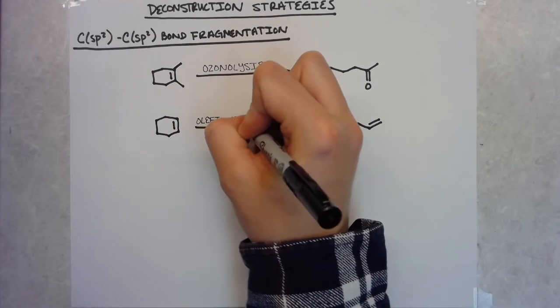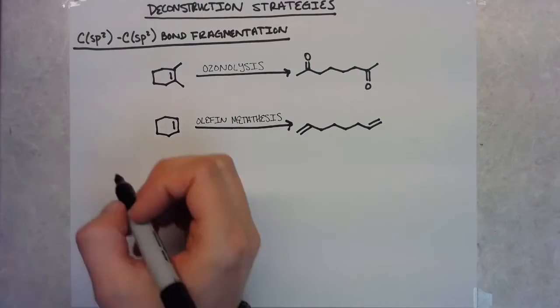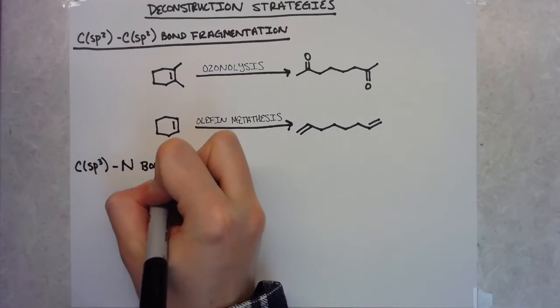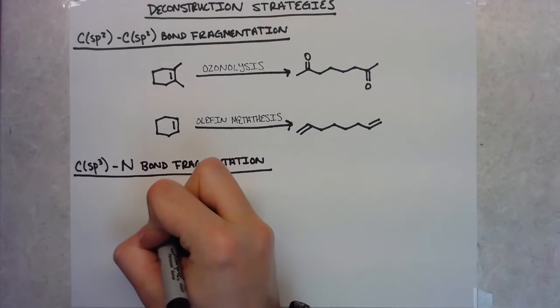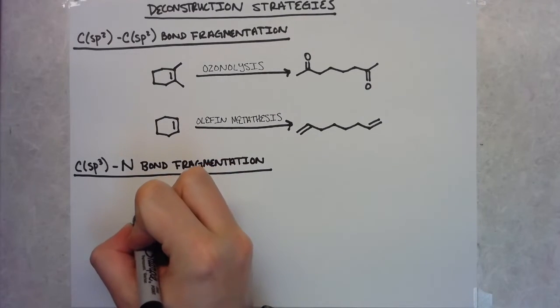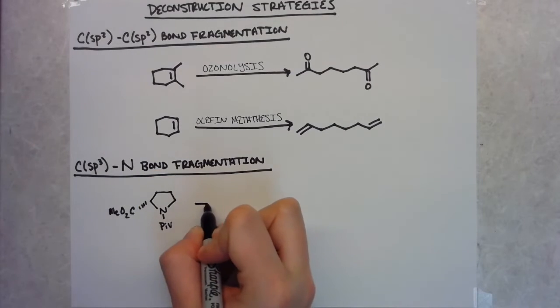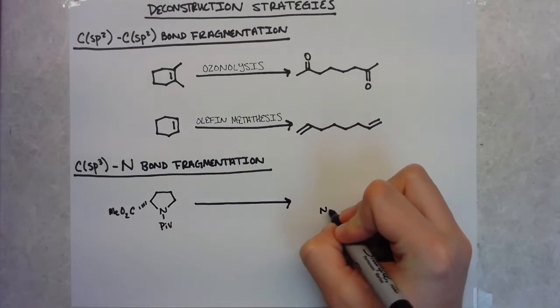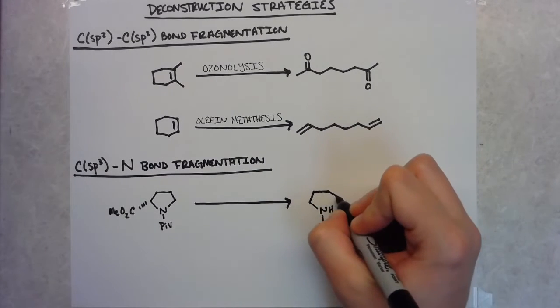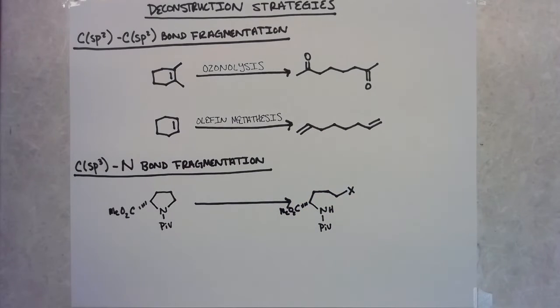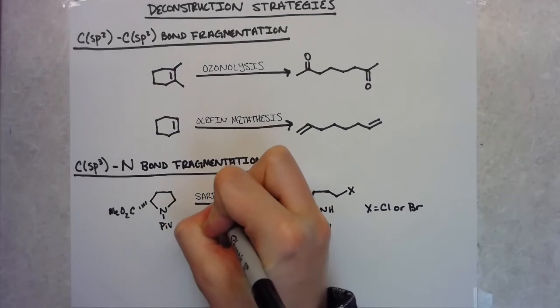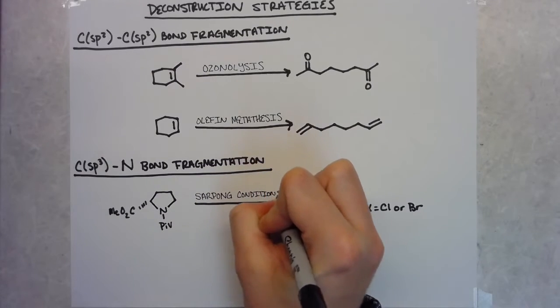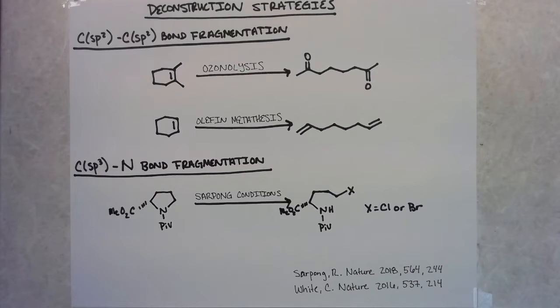If we jump now to carbon heteroatom bonds, there are methods to deconstruct these bonds. Two that come to mind that have been used in methods to build complexity are work by Richmond Sarpong, in which he looked at activating carbon nitrogen bonds. And kind of just one example is the ability to activate proline and cleave that CN bond to then build complexity through either chlorination or halogenation, and then the ability to couple with those halogens. And in a related work, Christina White also has looked at the activation of CN bonds and proline as a means to kind of, at the end of complex syntheses of polyamino acids, cleave those bonds to then build functional complexity in these molecules.